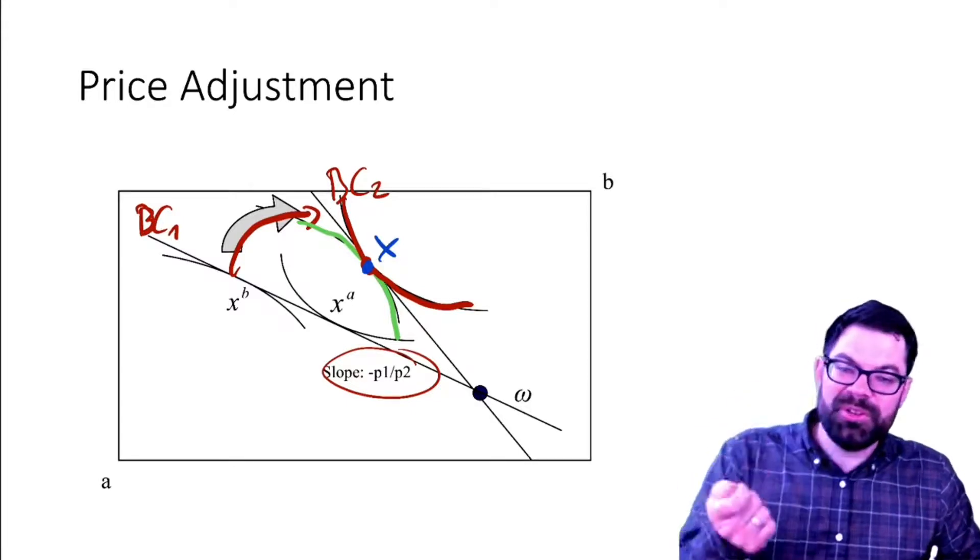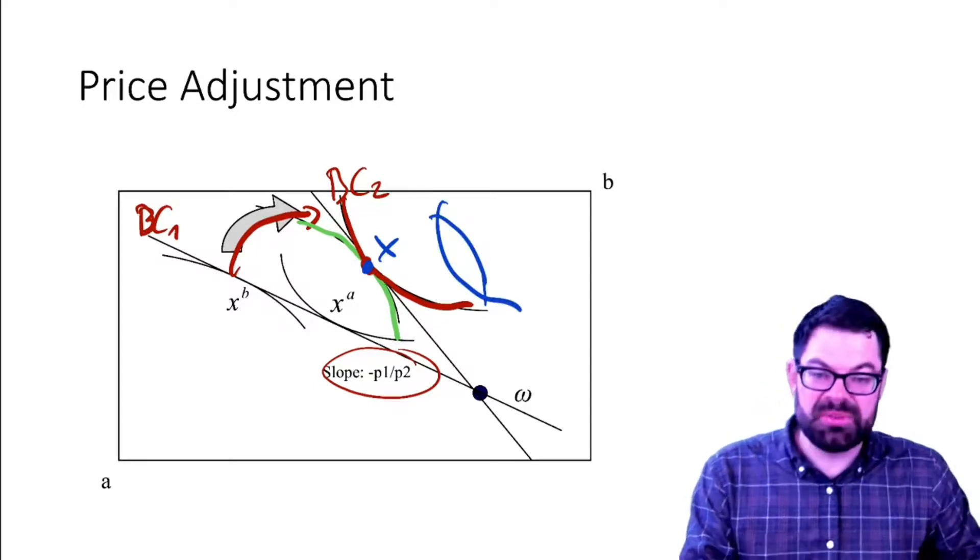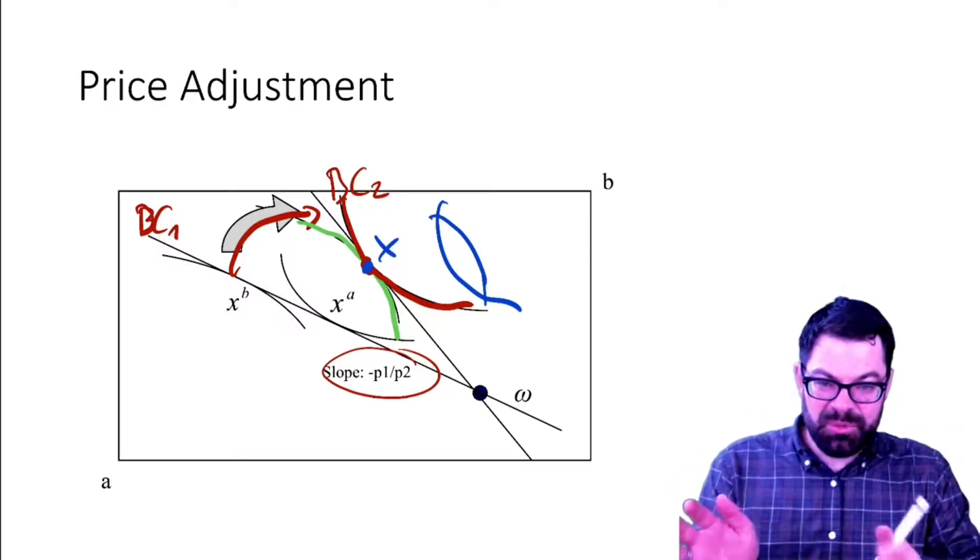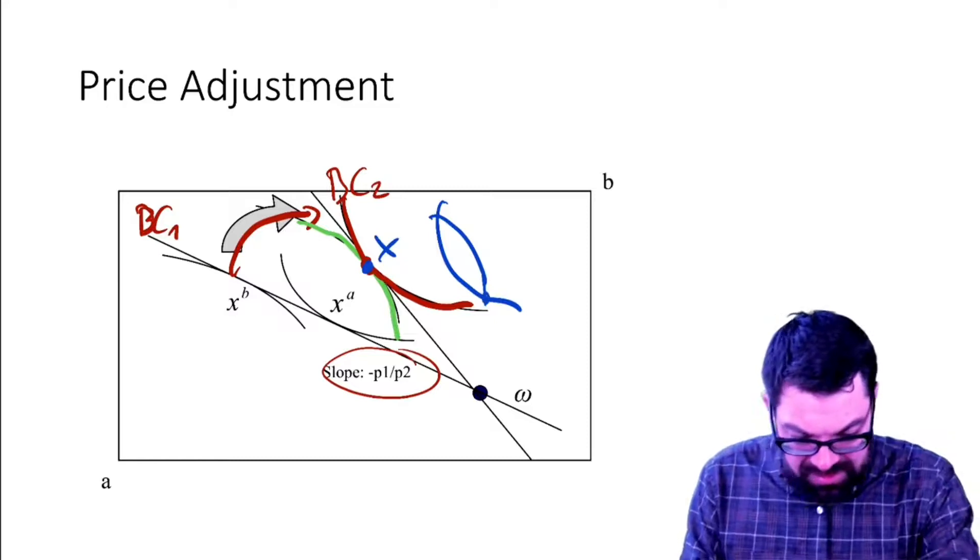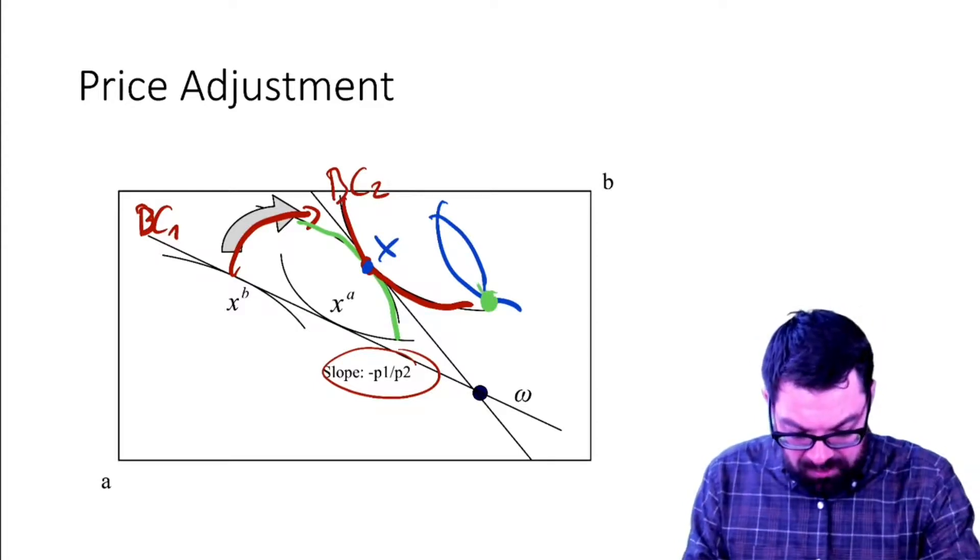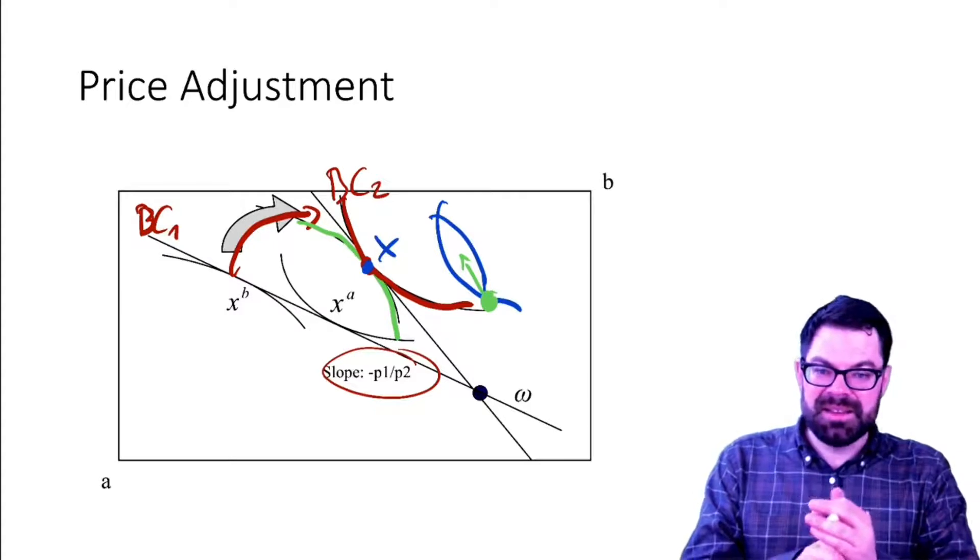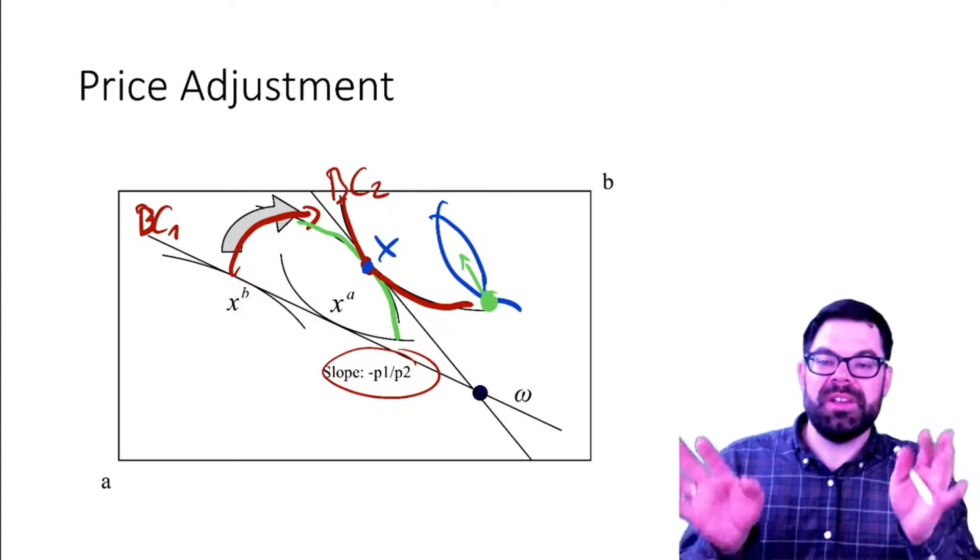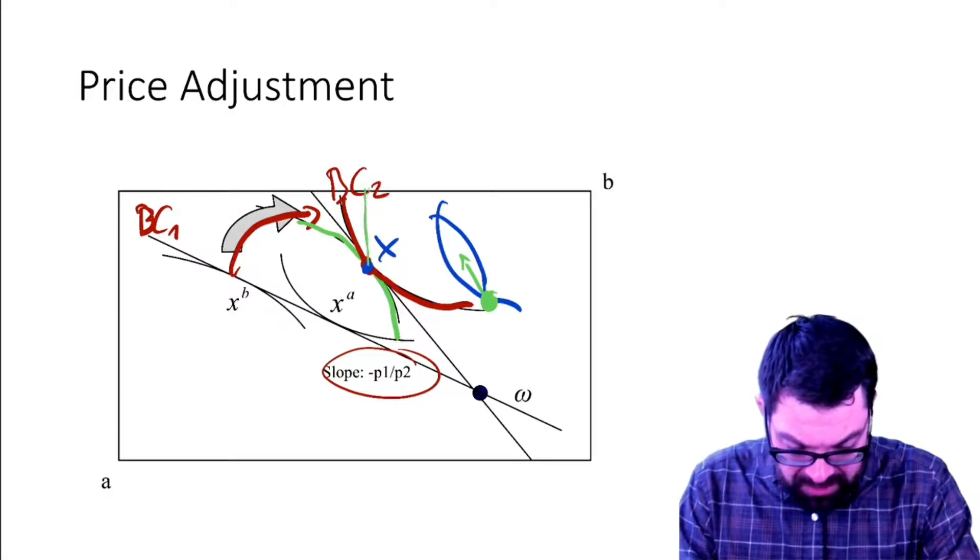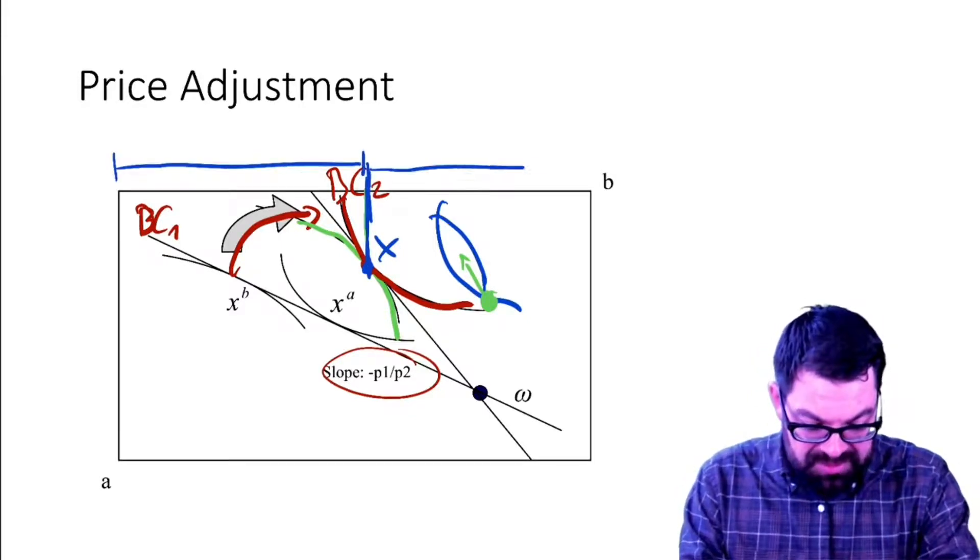So what does that mean? At that point, let's call this x, at that point x there is no further gains from trade. If you remember, we had in one of the last videos this lens that is defined by the indifference curves of both. If we are in a consumption point that is somewhere down here, then obviously we could move through trade into this lens and make at least one if not both parties better off. But at the point x, the blue point here, there is no further gains from trade.